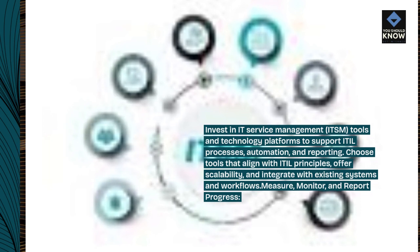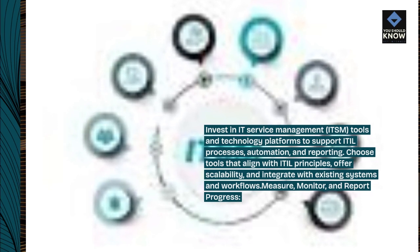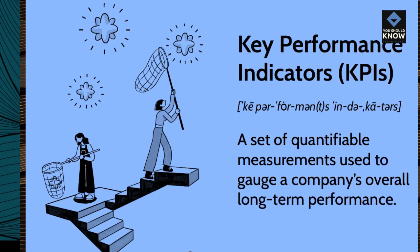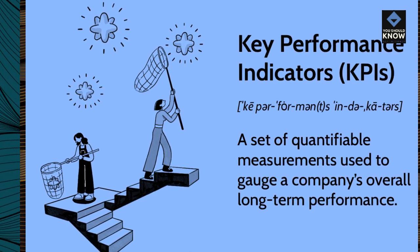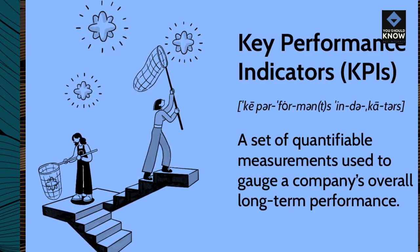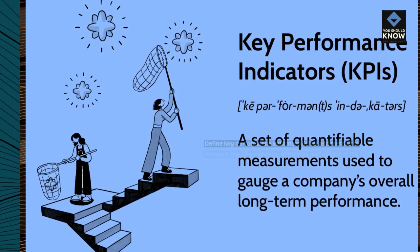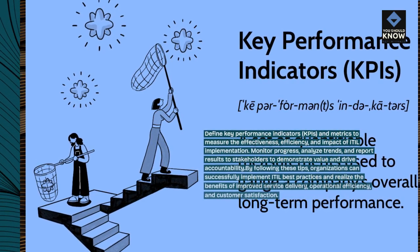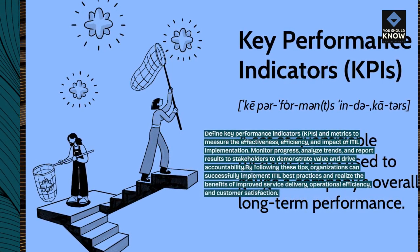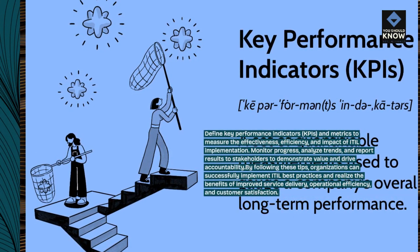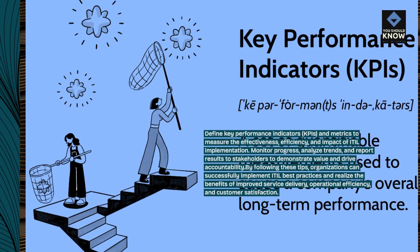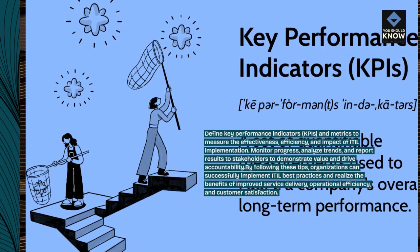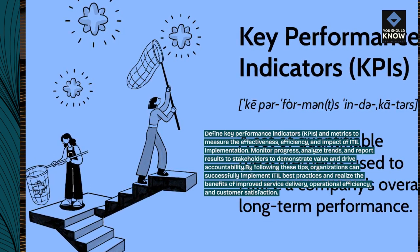Measure, monitor, and report progress. Define key performance indicators (KPIs) and metrics to measure the effectiveness, efficiency, and impact of ITIL implementation. Monitor progress, analyze trends, and report results to stakeholders to demonstrate value and drive accountability.